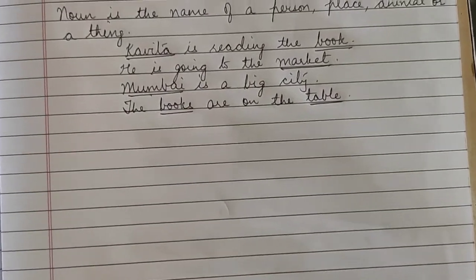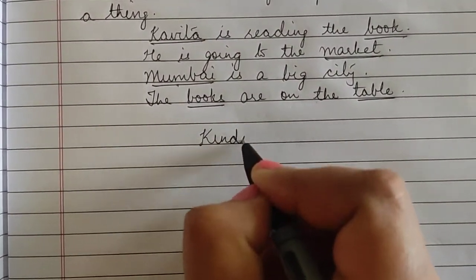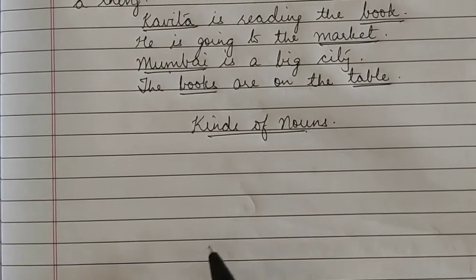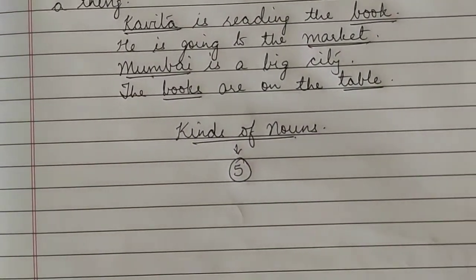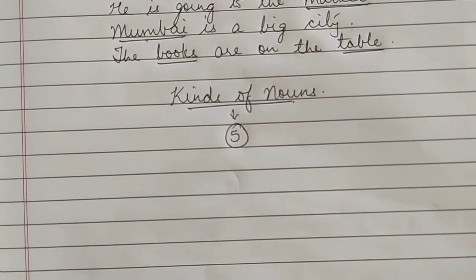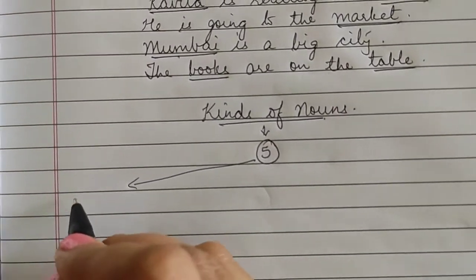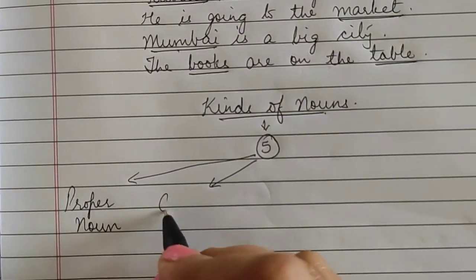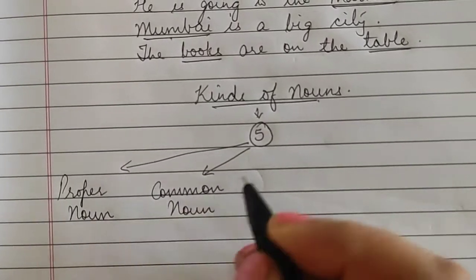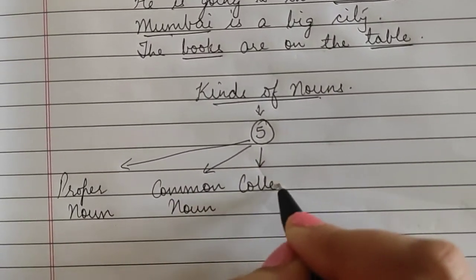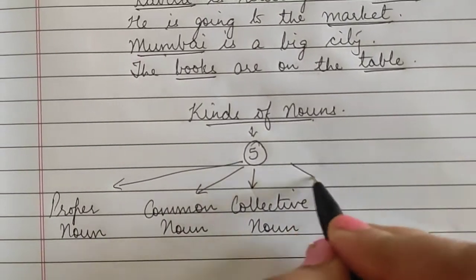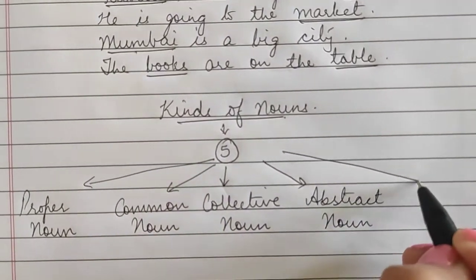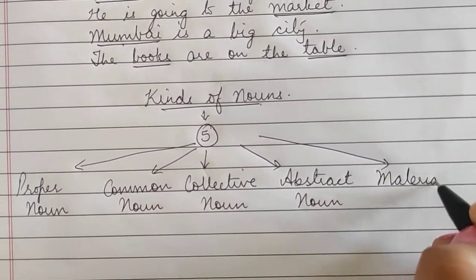Now children let's move on to different kinds of noun. There are five different kinds of noun. The first one is proper noun, the second one is common noun, next is collective noun, next is abstract noun, and then the last one is material noun.